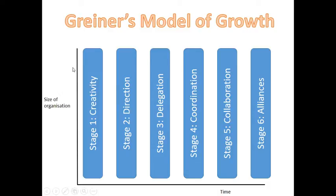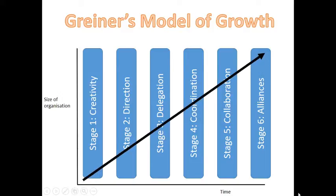So let's have a look at the model. Here we've got the size of the organisation — when the organisation is small it's down here, and then as we go up the vertical axis we get to large organisations, and this horizontal axis represents time. Greiner's theory is that an organisation will grow in size, and as it does so it goes through these different stages of growth, characterised by different organisational structures, different roles of managers and staff, different ways of communicating, and each stage comes to an end when there is a particular crisis unique to that stage.